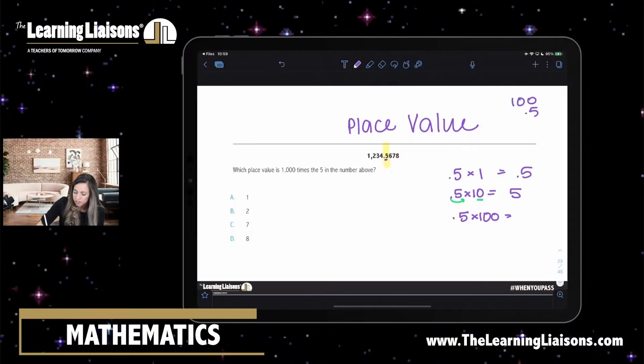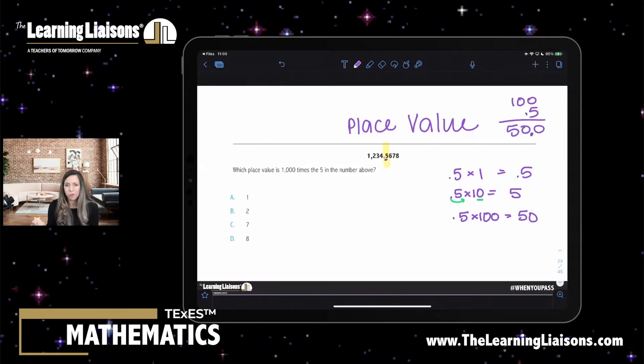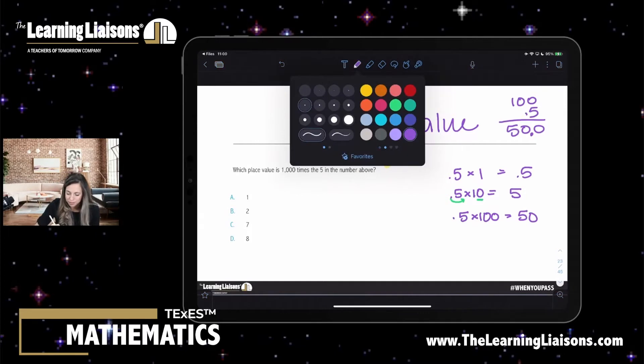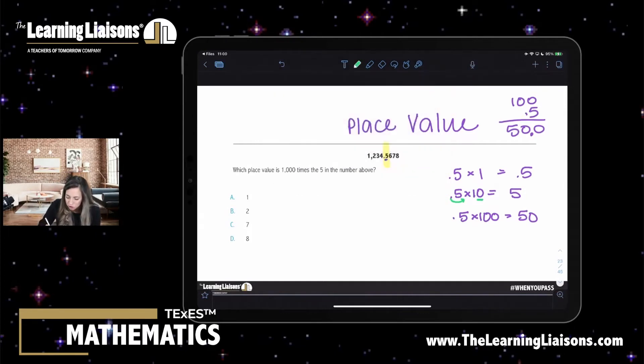So if I do 100 times 0.5, I'm going to get 50. What happened to that decimal place? That decimal place moved two places to the right. So what do you think is going to happen to the thousand? It's going to move three places.